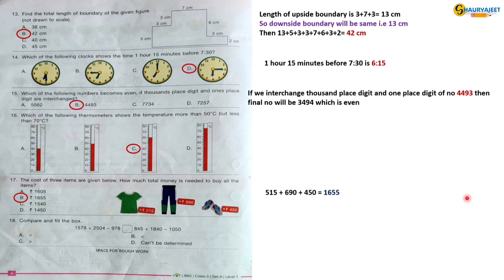Question 18: Compare and fill in the box. If we calculate the left side equation, the answer will be 3105. If we calculate right side equation, the answer will be 1635. That means the left side equation is greater than right side equation. So the correct option is option C, greater than.